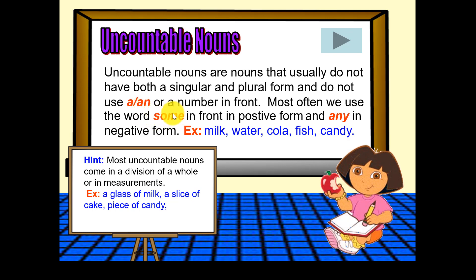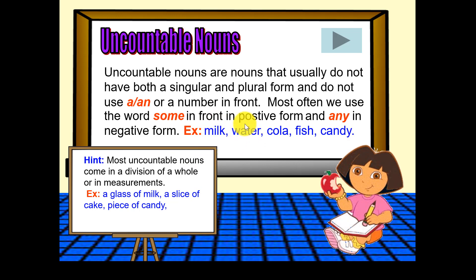So we have to use the word 'some' if it's positive, and 'any' if it's negative. Let's look at a positive one. Most of these are uncountable. Milk is a liquid — you can't count it. Liquids are uncountable.